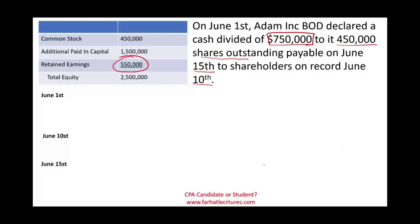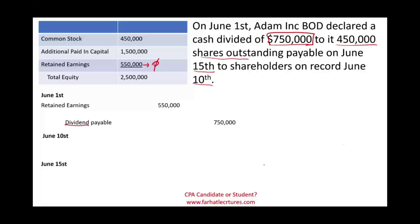Is that possible? Yes, it is possible. As long as they have the cash, they can send the checks and transfer the money to the shareholders. However, in terms of dividend, they cannot consider the whole $750,000 as dividend, because dividend comes out of retained earnings. So we can only reduce retained earnings to zero — we debit retained earnings $550,000. We declared $750,000 of dividend, creating a liability of $750,000, but those two entries don't balance — we are missing $200,000.